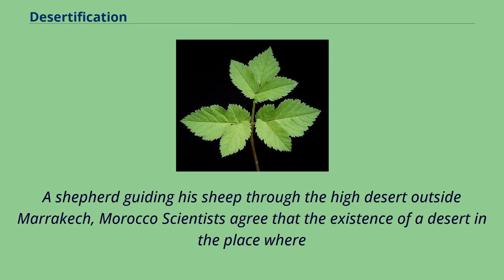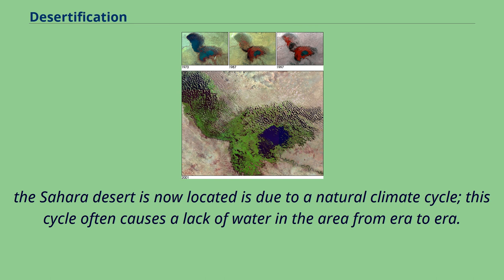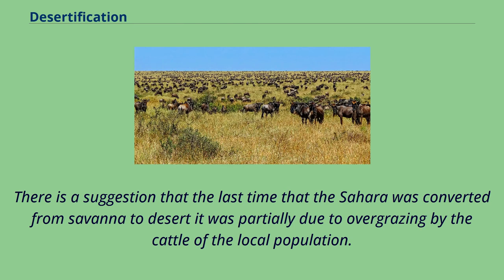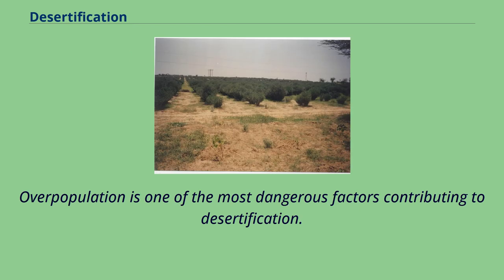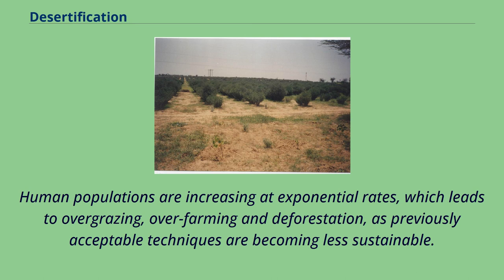Scientists agree that the existence of a desert in the place where the Sahara is now located is due to a natural climate cycle, which often causes a lack of water in the area from era to era. There is a suggestion that the last time the Sahara was converted from savannah to desert it was partially due to overgrazing by the cattle of the local population. Overpopulation is one of the most dangerous factors contributing to desertification, as human populations are increasing at exponential rates, leading to overgrazing, overfarming and deforestation as previously acceptable techniques become less sustainable.